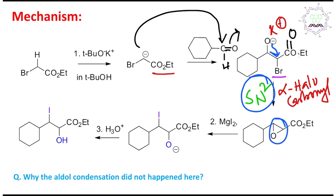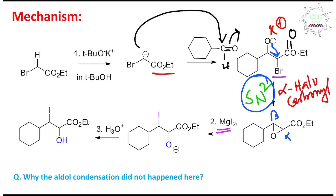This alpha-beta epoxy ester derivative is produced, and this reaction is known as Darzen's reaction — or Darzen's glycidic ester condensation. Now, in the next stage, the product is treated with magnesium iodide.